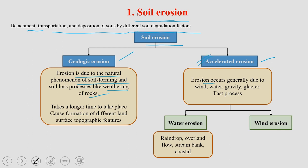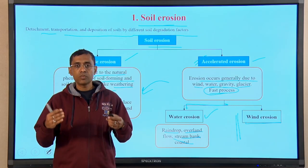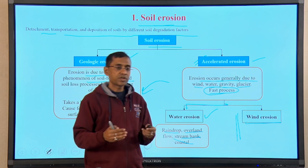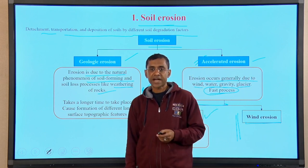Accelerated erosion occurs generally due to wind, water, gravity, and glacial action, and is a very fast process compared to geologic erosion. Accelerated erosion is largely carried out by water and wind. In water erosion, raindrop action, overland flow, stream bank erosion, and coastal erosion are the main forms. In wind erosion, soils are taken off from the system by the action of fast wind, with various types of wind erosion occurring under different wind conditions. All of these create enormous pressure on the soil, causing land degradation that requires great effort to reverse.